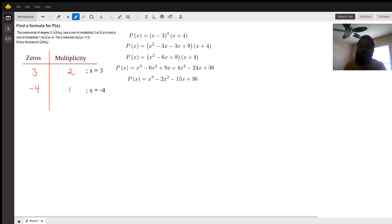For the zero of negative 4, the exponent of that zero is multiplicity 1 or degree 1. So we write it as a function of P(x) equals (x minus 3), which is the zero expressed as a factor with a multiplicity of 2, exponent 2, times (x plus 4).